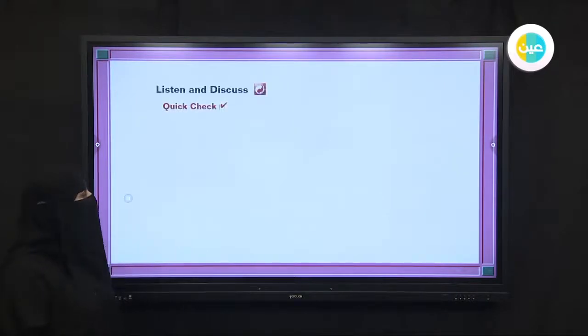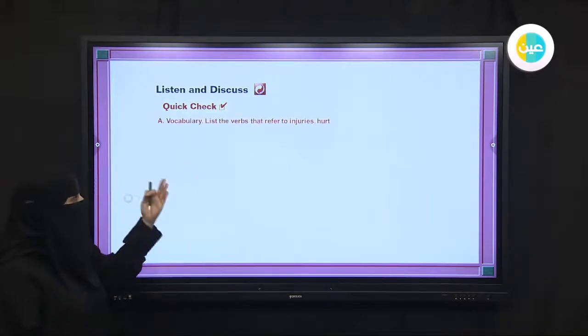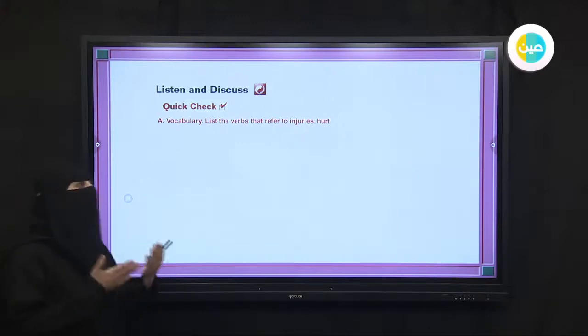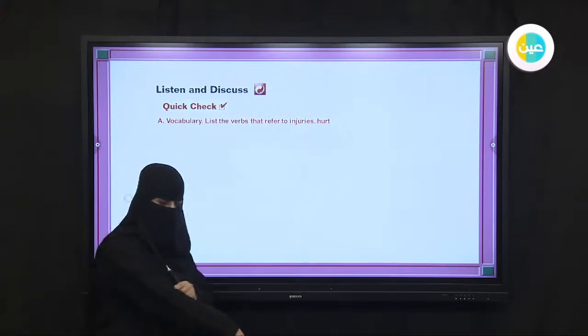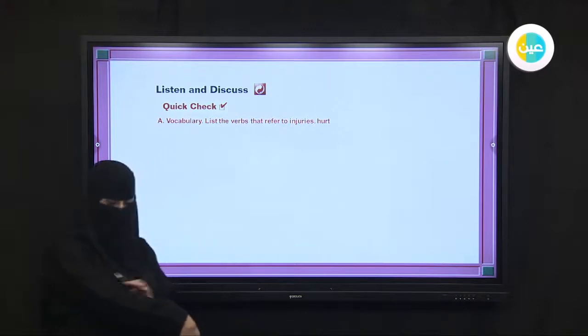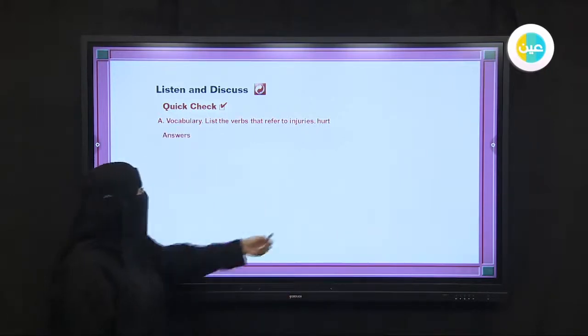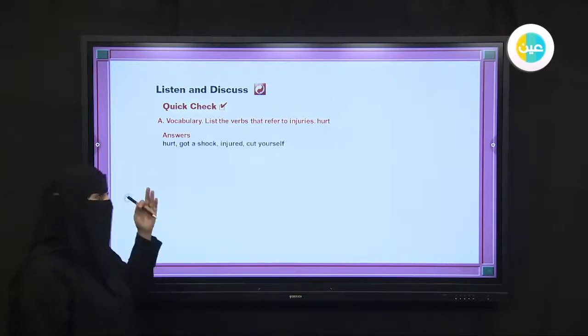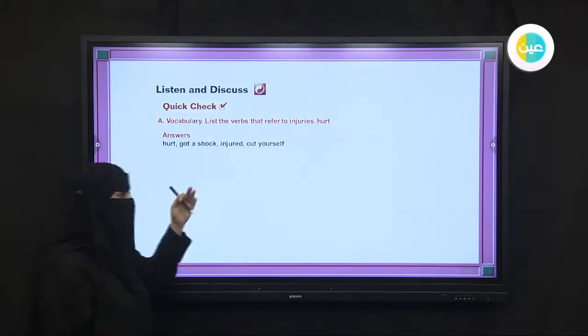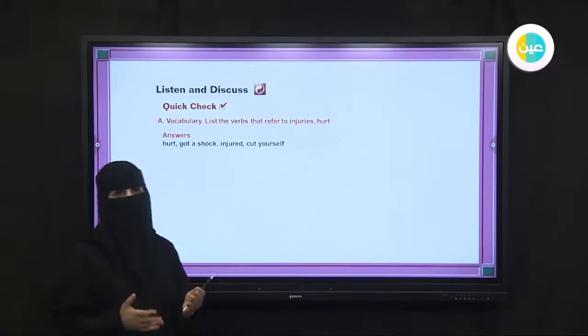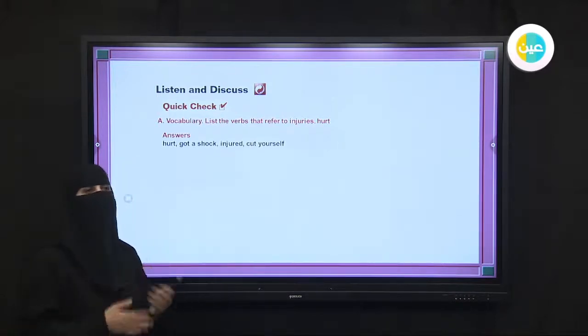So listen and discuss. Quick check. Vocabulary lists the verbs that refer to injured. What's the meaning of injured? If I told you I injured myself, it means something bad happened to me, something that makes pain for my body and sometimes makes the blood go out. The answer for it is hurt, got a shock, injured and cut yourself. All of those words, we can use if you hurt yourself, if you're feeling pain.